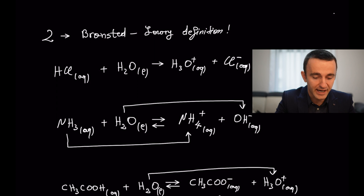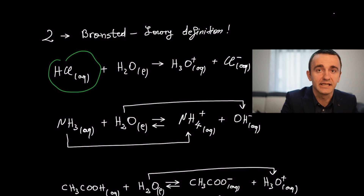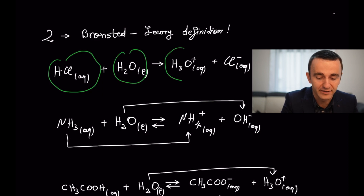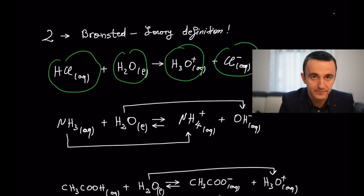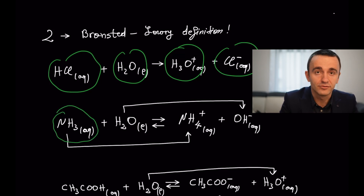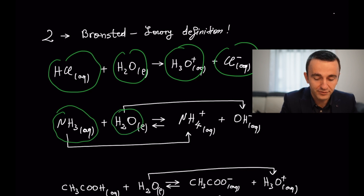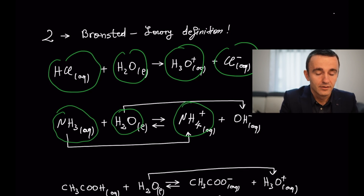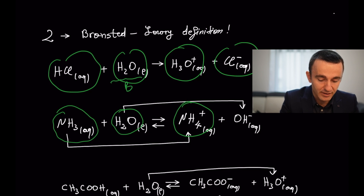According to this definition, hydrochloric acid is an acid because it donates an H+ ion to a water molecule to form the hydronium ion and chloride ion (Cl-). And ammonia is considered a base according to the Brønsted-Lowry definition because it accepts a proton from water and forms ammonium (NH4+). If we look carefully at these two equations, we see that water acts as a base in the first reaction and as an acid in the second.